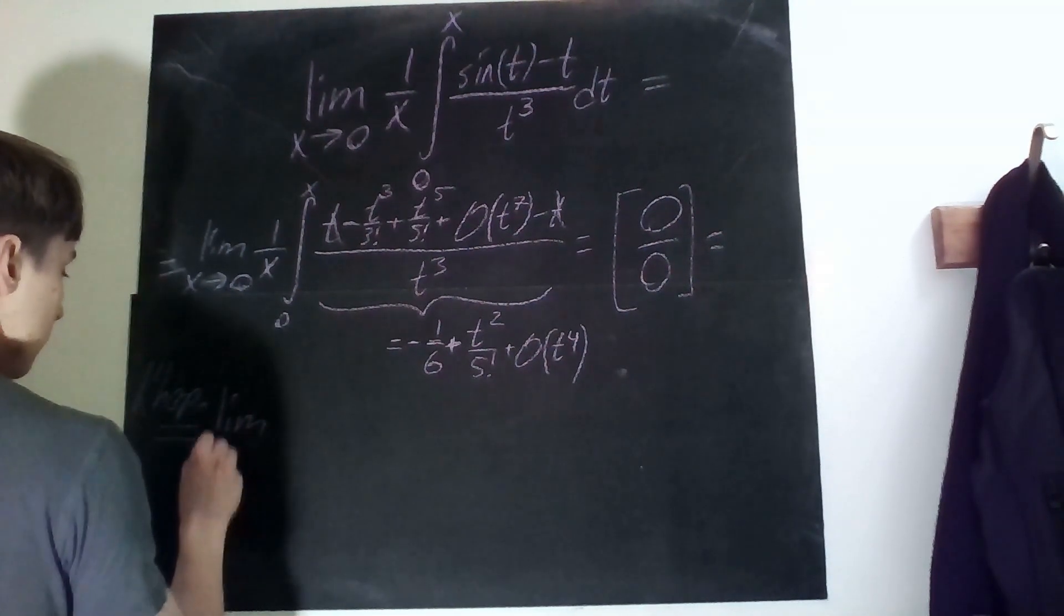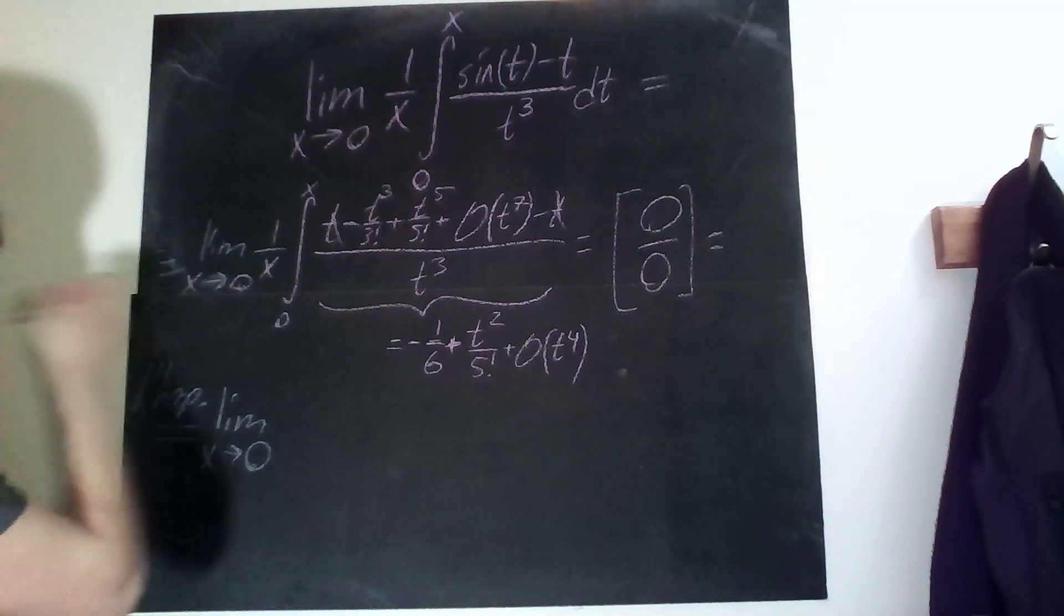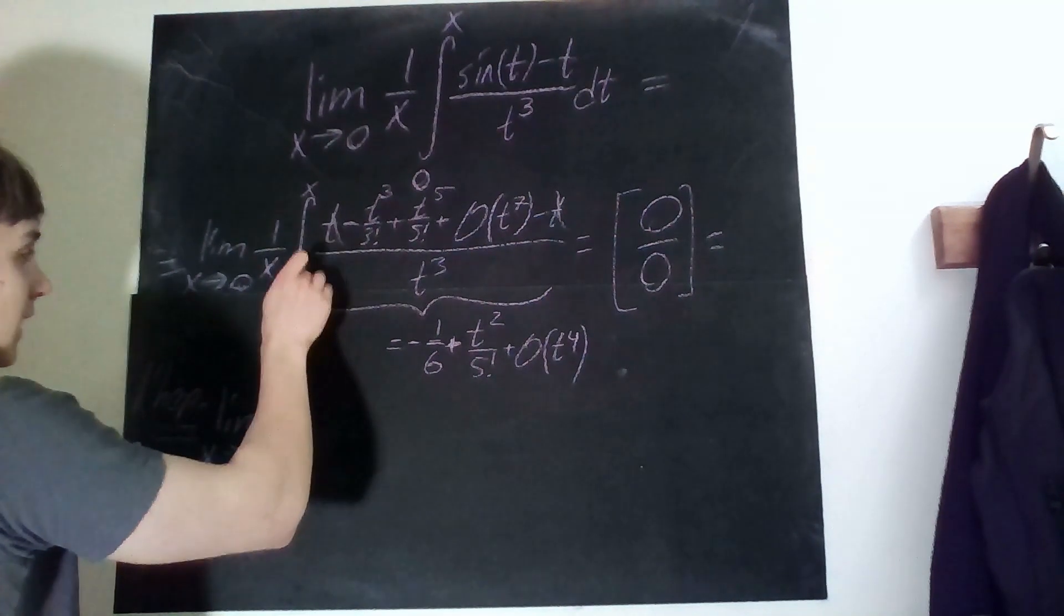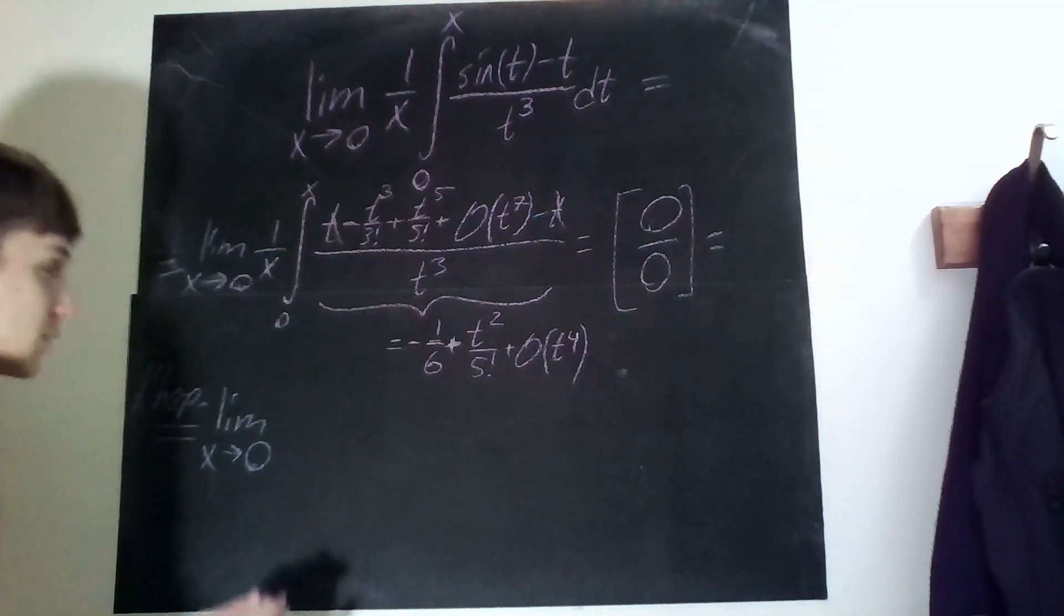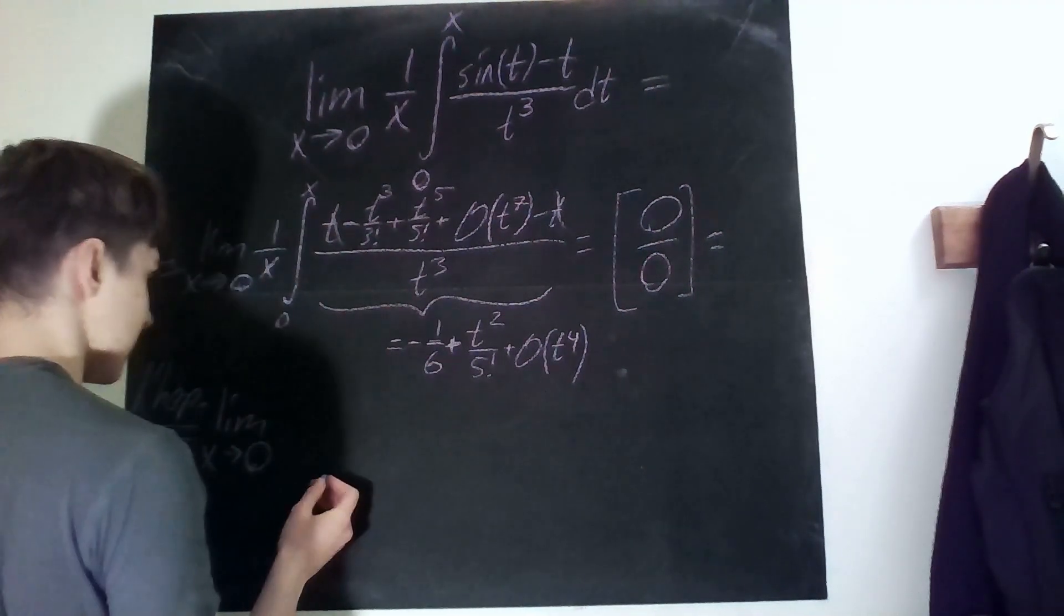We can take the derivative on both sides in both the denominator and the numerator, and the derivative there is just one so that just disappears. And then by the fundamental theorem of calculus this integral also disappears, so everything we get left is just this thing here.